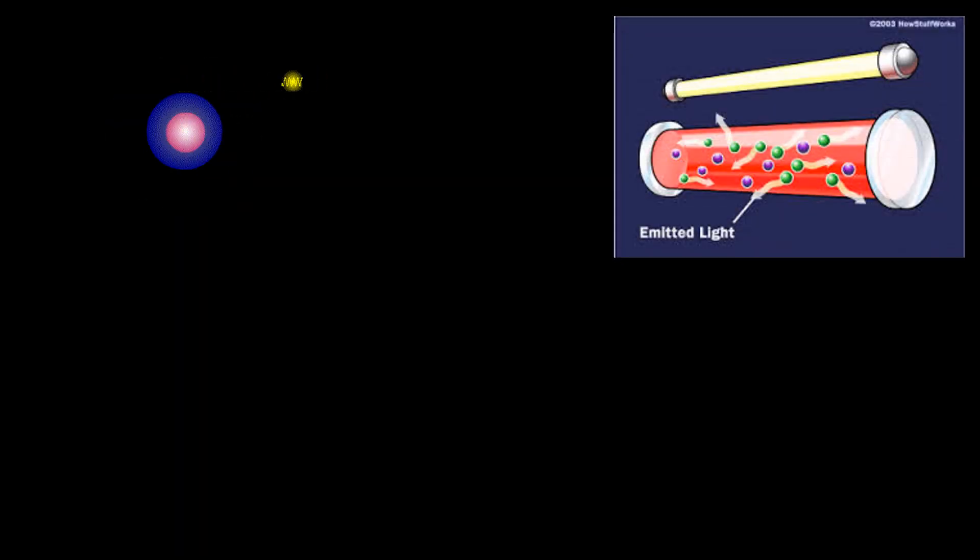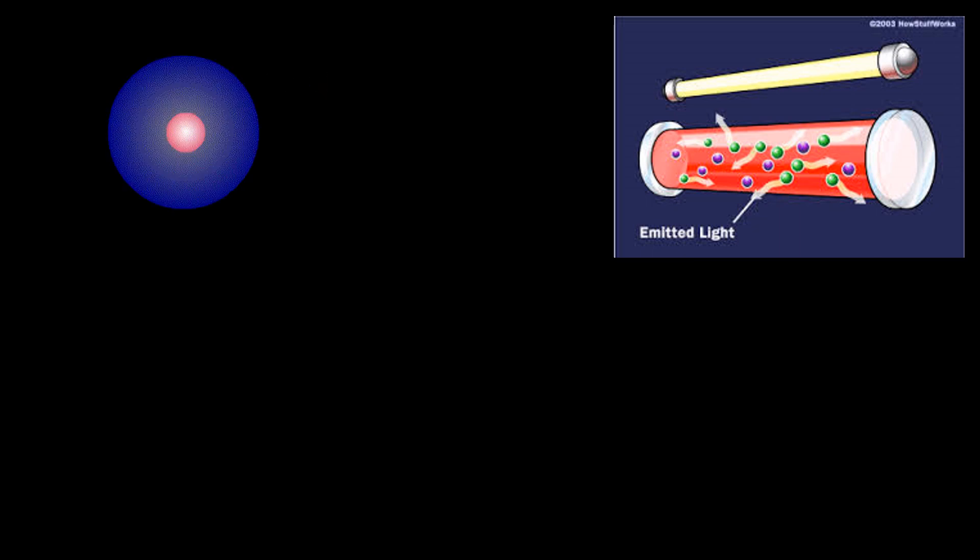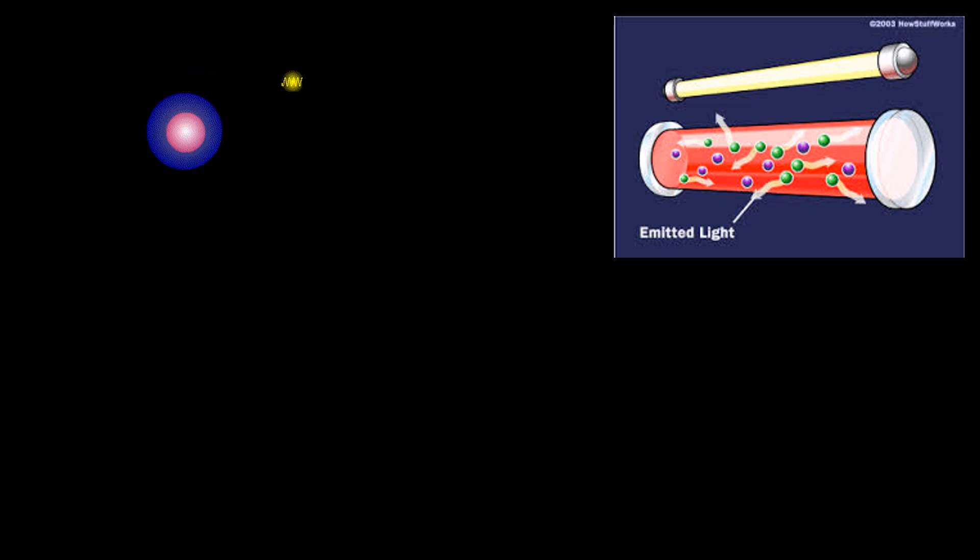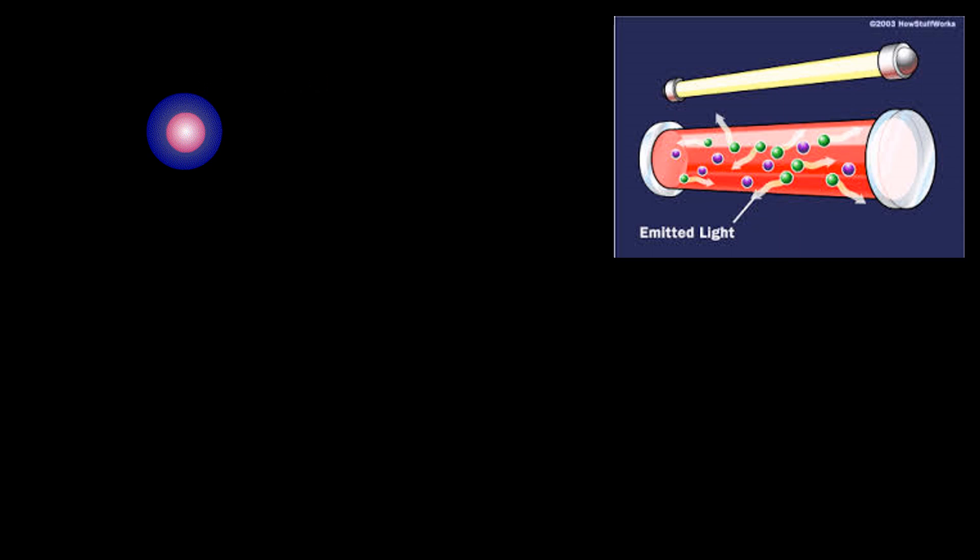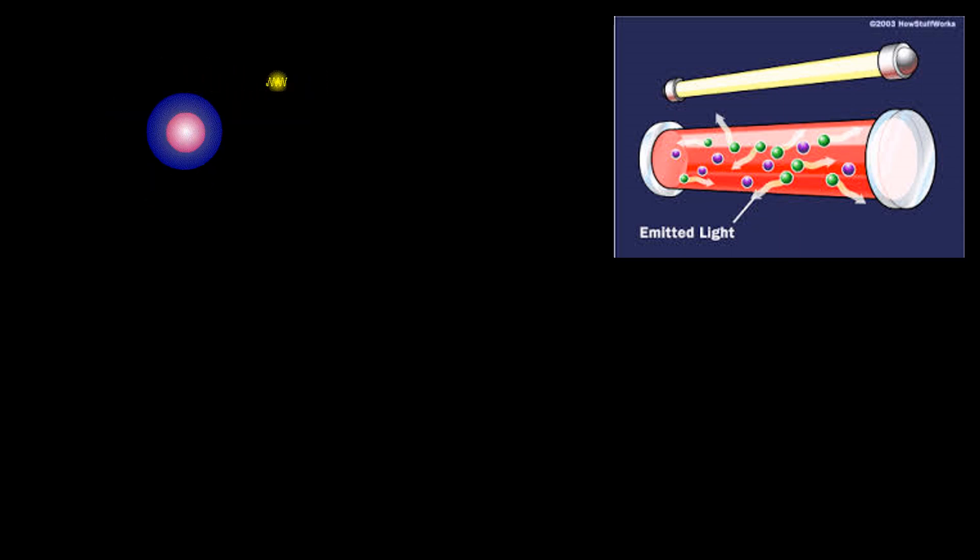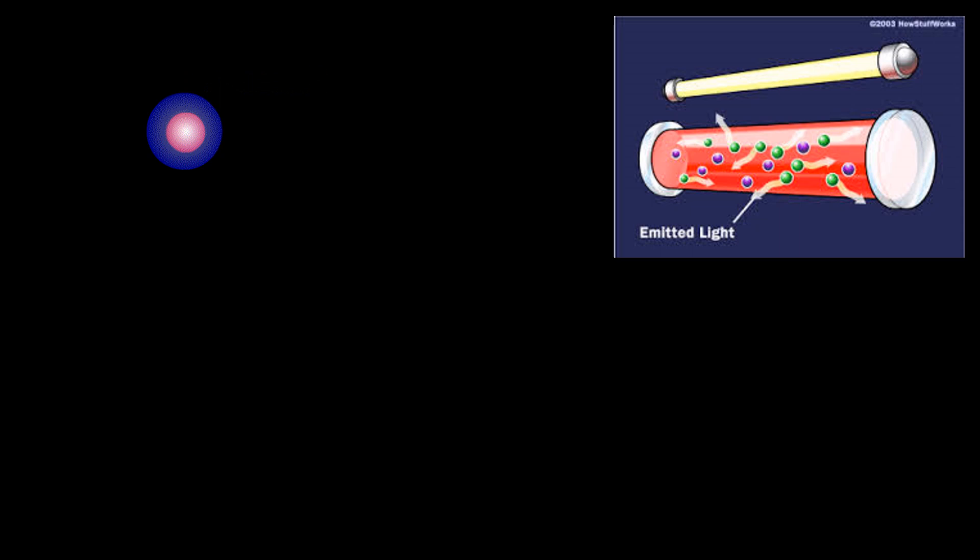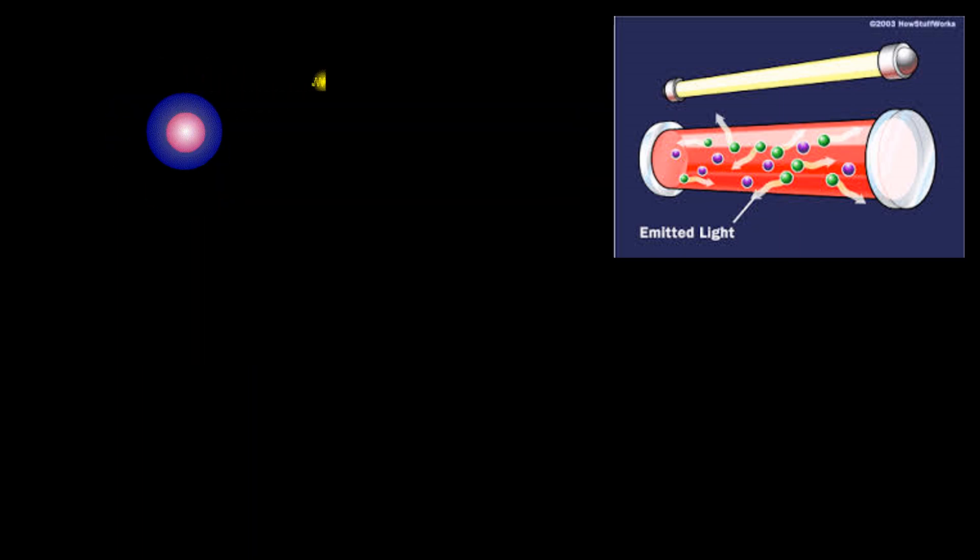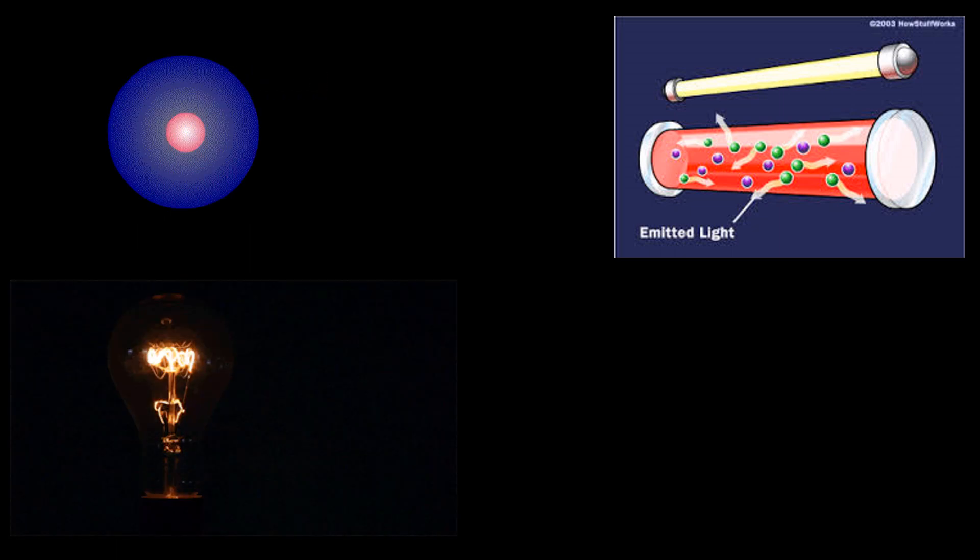When an electron in an atom gains energy, it moves to a higher energy level. Note that the energy received is electromagnetic energy. When this happens, we say that the atom has been excited and is no longer in equilibrium. As we know, everything in the universe always strives to attain the lowest possible energy state.